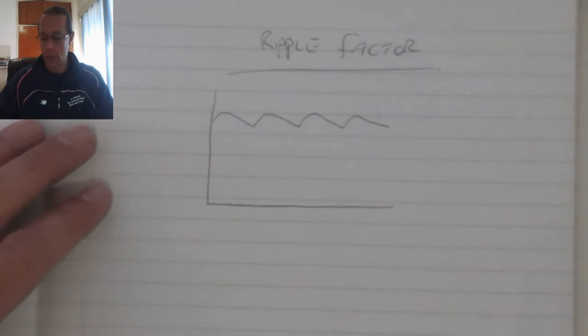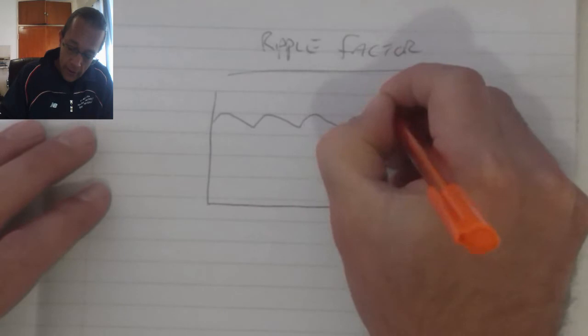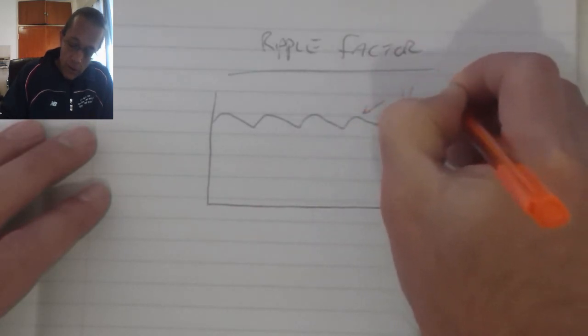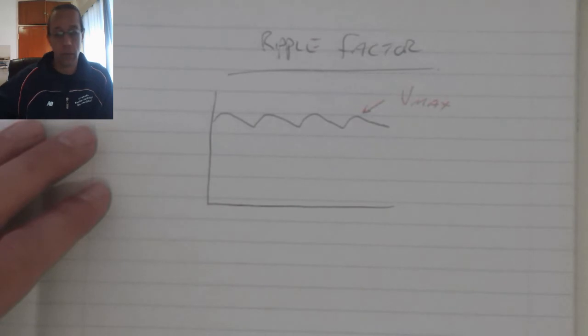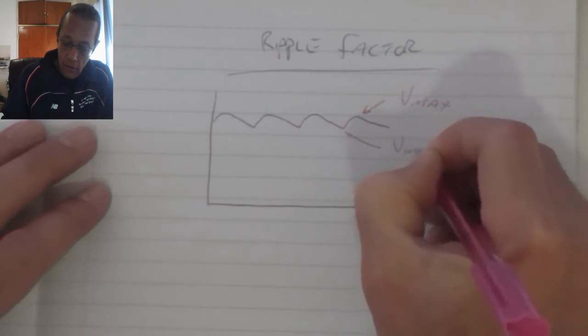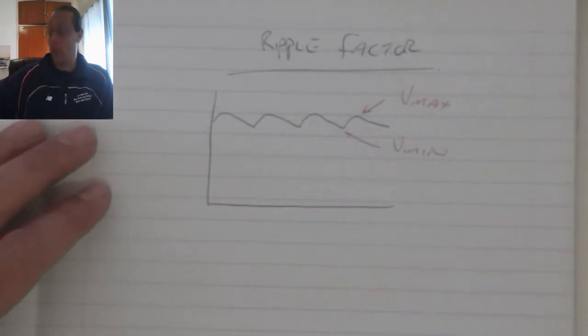Depending on the type of filter. Now on this graph, we find a maximum value and a minimum value.